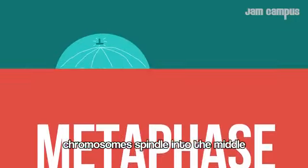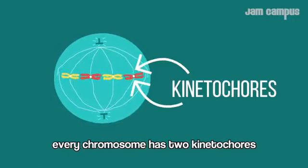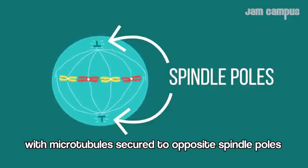Metaphase is the next one. Chromosomes line up in the middle. Every chromosome has two kinetochores, with microtubules secured to opposite spindle poles.